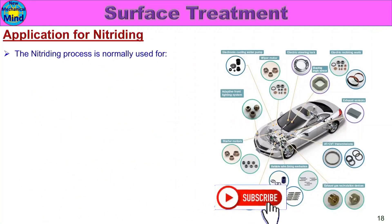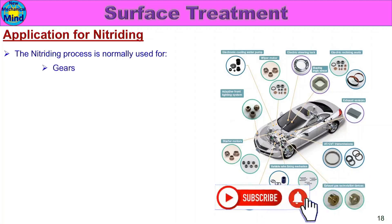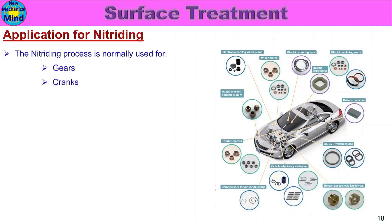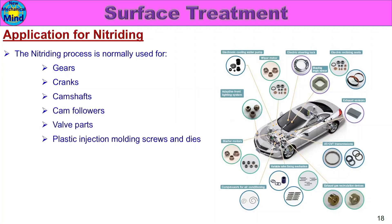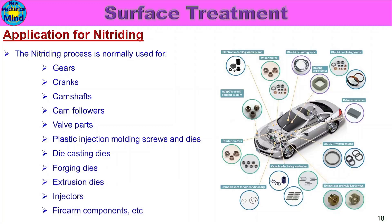The nitriding process is normally used for: gears, cranks, camshafts, cam followers, valve parts, plastic injection molding screws and dies, die casting dies, forging dies, extrusion dies, injectors, and firearm components.